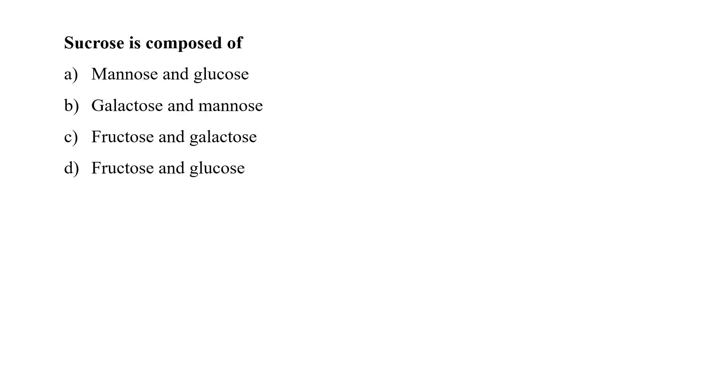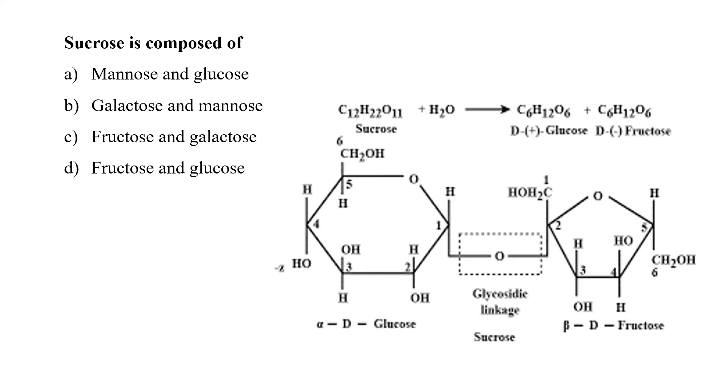Sucrose is composed of mannose and glucose, galactose and mannose, fructose and galactose, or fructose and glucose. Sucrose is a disaccharide which is made up of glucose and fructose when they are connected through their respective anomeric hydroxyl groups. Due to this reason only, it is a non-reducing sugar. So here option D would be the correct answer.